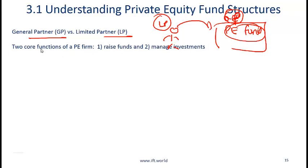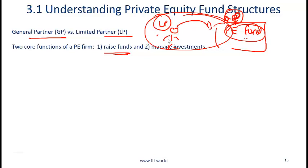There are two core functions of a private equity firm. One is to raise funds and the other is to manage investments, and those pictures highlight these two core functions. Getting money from investors or LPs is obviously important. The private equity fund has its own money — the GPs are also investors — but they need money from LPs or outside investors. So raising money or marketing is one function, and the other is evaluating portfolio companies, putting money in them, and actually helping run and manage those companies.